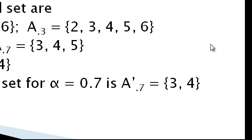For example, consider the universal set X equals {1, 2, 3, 4, 5, 6, 8, 9, 10}. The fuzzy set A is defined with membership values: 1 gets 0.2, 2 gets 0.5, 3 gets 0.8, 4 gets 1, 5 gets 0.7, and 6 gets 0.3. The possible alpha level cuts are: the 0.2-cut of A equals {1, 2, 3, 4, 5, 6}, and the 0.3-cut of A equals {2, 3, 4, 5, 6}.